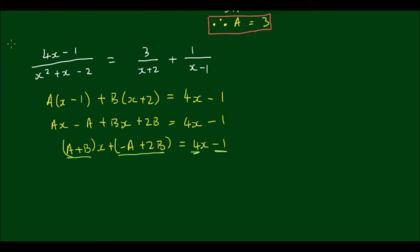So let's set these equations up. Let's call equation 1: A plus B is equal to 4. And this is called the method of equating coefficients.